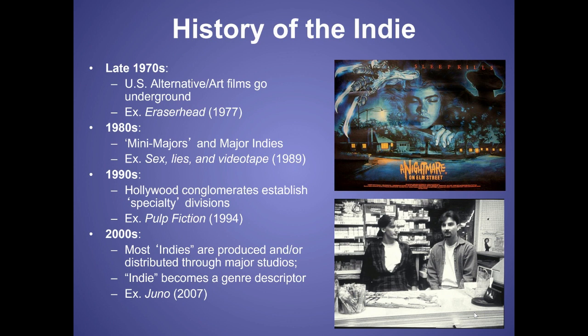In the 90s, Hollywood conglomerates established specialty divisions — similar to what music labels do with a sub-label underneath a big label. Studios did the same thing. These divisions function very much like an indie film production house, so the films feel very indie. An example of that is Pulp Fiction.